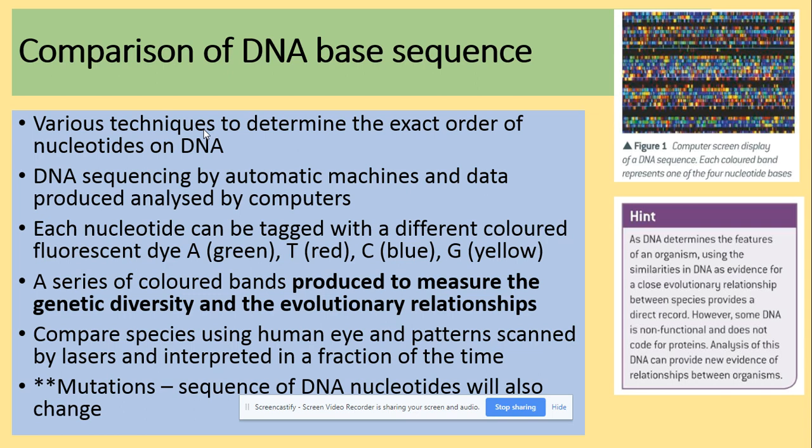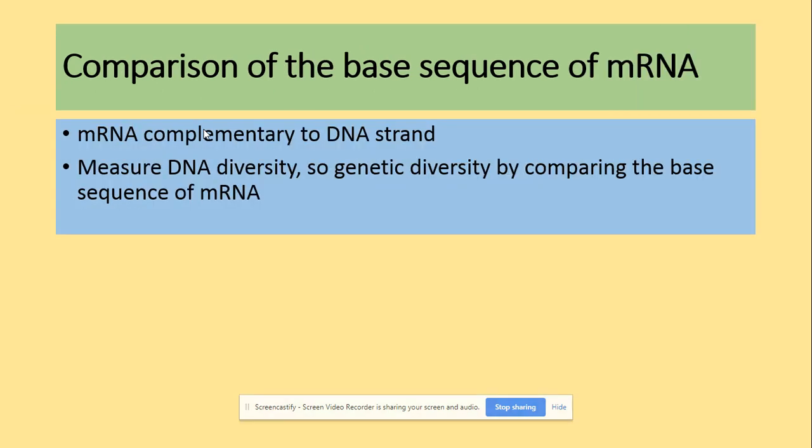We can compare species using DNA sequencing. The only limitation is mutation, which will change the sequence of DNA nucleotides within the specific DNA being sequenced. Looking at mRNA sequences — mRNA is complementary to the DNA strand, so we can measure DNA diversity. Genetic diversity can also be assessed by looking at the sequence of mRNA alone.